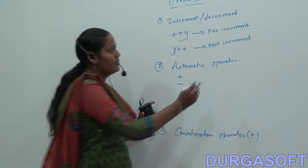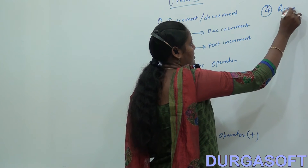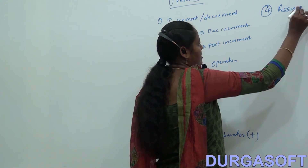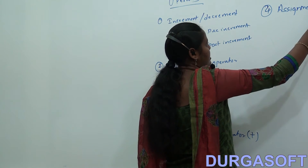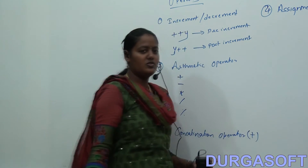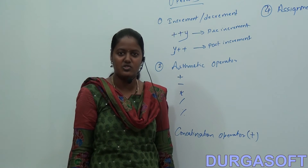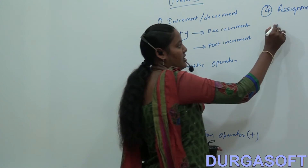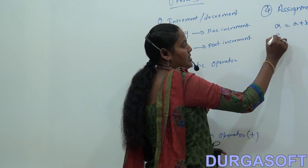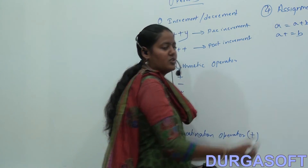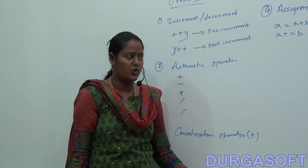The fourth one is the assignment operator. The assignment operator is used to reduce the code. Suppose we are going to write a equal to a plus b — instead of writing that, you can write a plus equal to b. So using the assignment operator you are going to reduce the code.